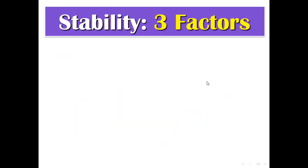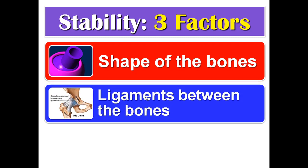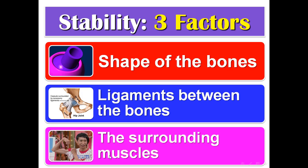Three factors affect the stability of any joint: the shape of the bones, the ligaments between the bones, and the surrounding muscles.